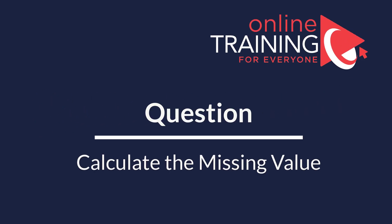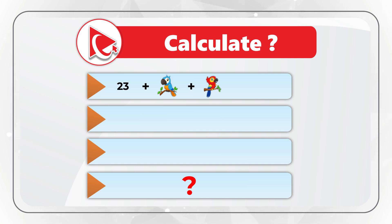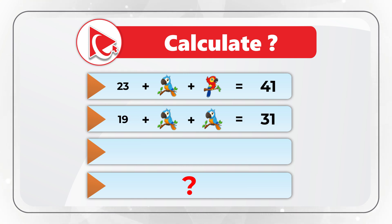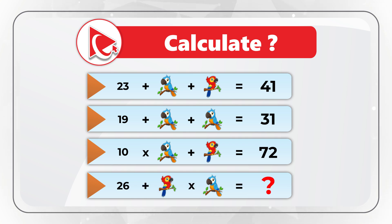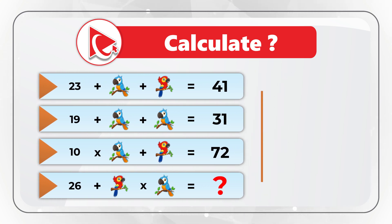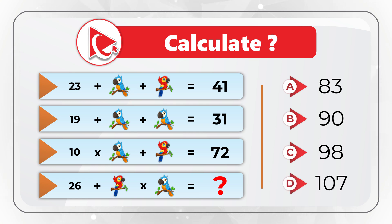One of my favorite questions is where you need to calculate the missing value. You're presented with three equations and a fourth where the result is missing. Equation 1: 23 × blue parrot + red parrot = 41. Equation 2: 19 + blue parrot + blue parrot = 31. Equation 3: 10 × blue parrot + red parrot = 72. The expression to solve: 26 + red parrot × blue parrot = ? Choices: A = 83, B = 90, C = 98, D = 107.